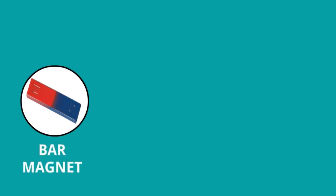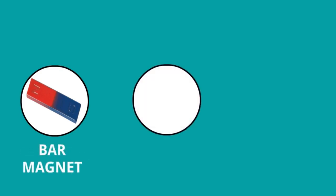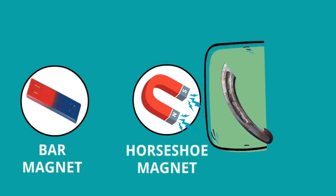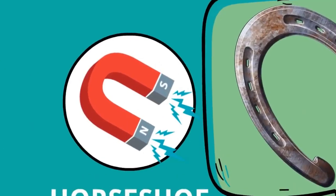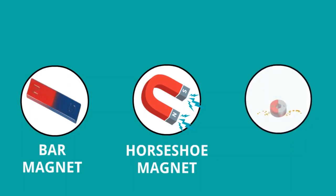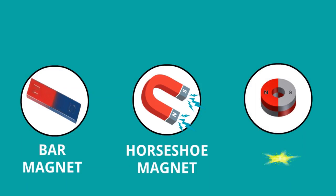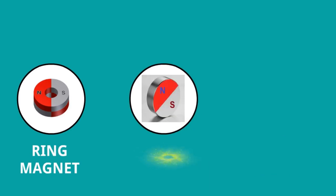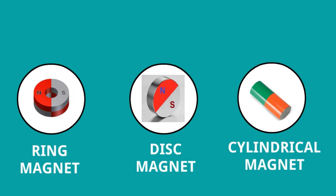We have seen different kinds of magnets. Bar magnet — this is just looking like a bar shape. Horseshoe magnet — this is just looking like a horseshoe, which is used to protect the horse hoof from wear. Ring magnet — it is looking like a ring. Disc magnet — its shape is like a disc.